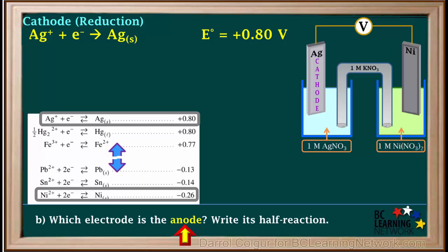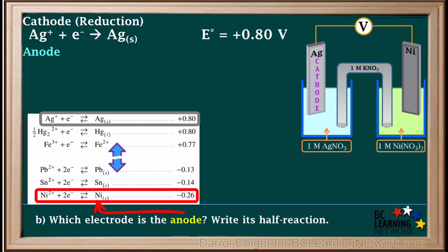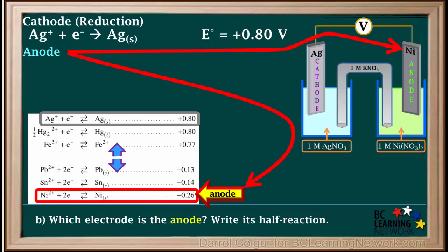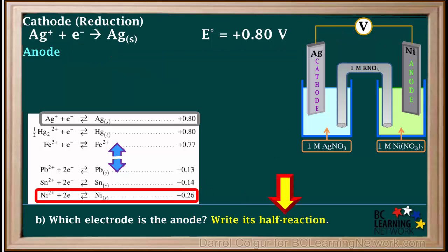Part B asks us for the anode and its half reaction. The anode is the lower of the two metals on the table, so it is nickel in this case. We'll mark nickel as the anode. We're asked to write the half reaction occurring at the anode, and we know that at the anode, oxidation occurs.